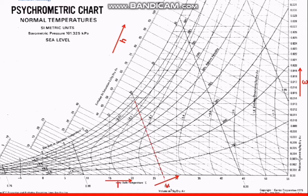The humidity ratio is given in kg per kg dry air. To find the amount of moisture — the amount of water — you take whatever value you find on this axis and multiply it by the mass of the air inside the system.